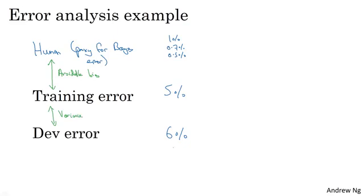So in this first example, whichever of these choices you make, the measure of avoidable bias will be something like 4%. It'll be somewhere between 4%, if you take that, to 4.5%, if you use 0.5%, whereas this is 1%.